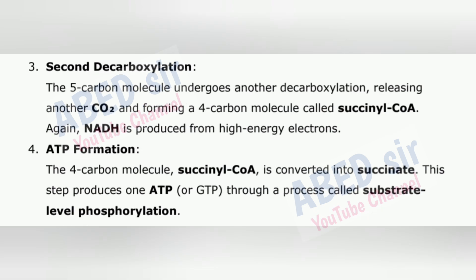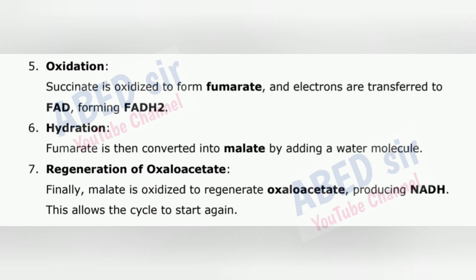3. Second Decarboxylation – the 5-carbon molecule undergoes another decarboxylation, releasing another CO₂ and forming a 4-carbon molecule called succinyl-CoA. Again, NADH is produced from high-energy electrons. 4. ATP Formation – the 4-carbon molecule succinyl-CoA is converted into succinate. This step produces 1 ATP (or GTP) through a process called substrate-level phosphorylation. 5. Oxidation – succinate is oxidized to form fumarate, and electrons are transferred to FAD, forming FADH₂.